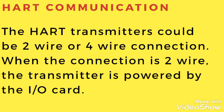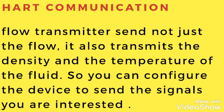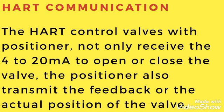The HART transmitter can be a 2-wire or 4-wire connection. When the connection is 2-wire, the transmitter is powered by the IO card. When the connection is 4-wire, the transmitter is powered by an external power supply. A flow transmitter sends not just the flow; it also transmits the density and temperature of the fluid, so you can configure the device to send the signals you are interested in. The HART control valve with positioner not only receives the 4-20mA signal to open or close the valve, but the positioner also transmits feedback on the actual position of the valve.